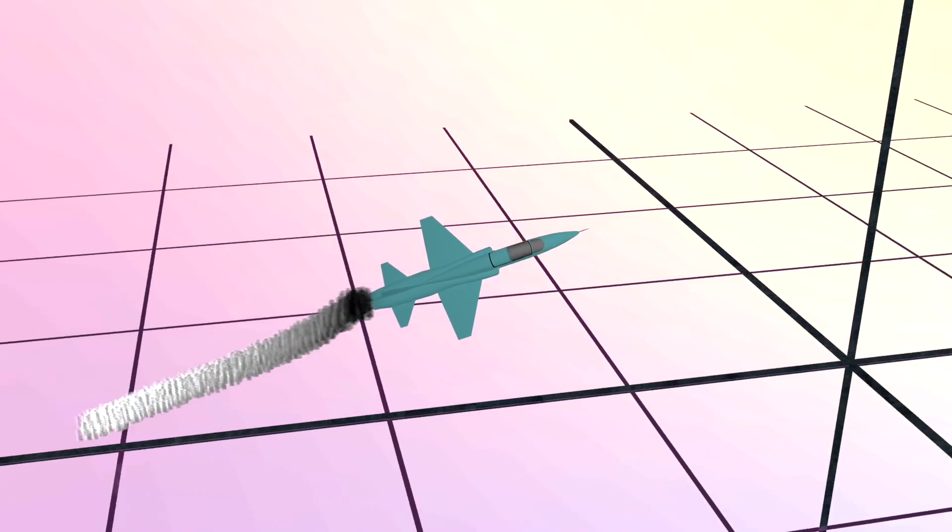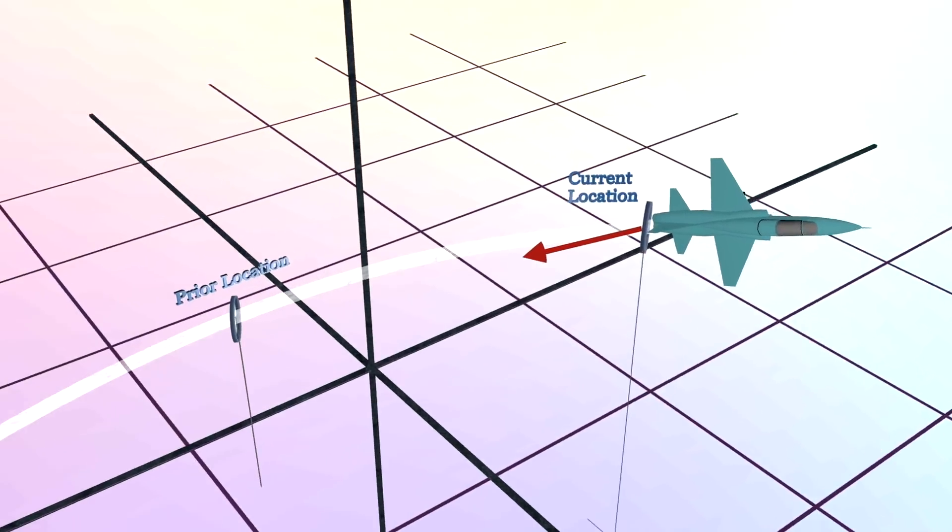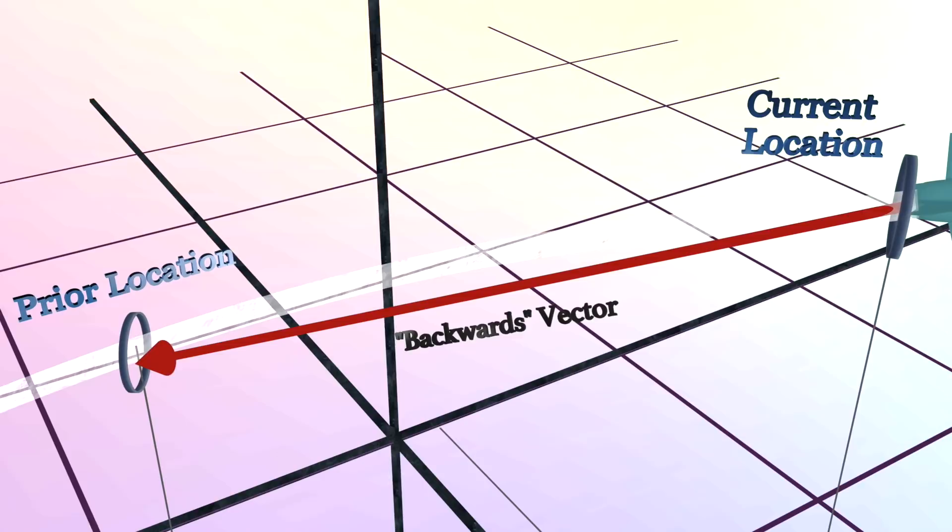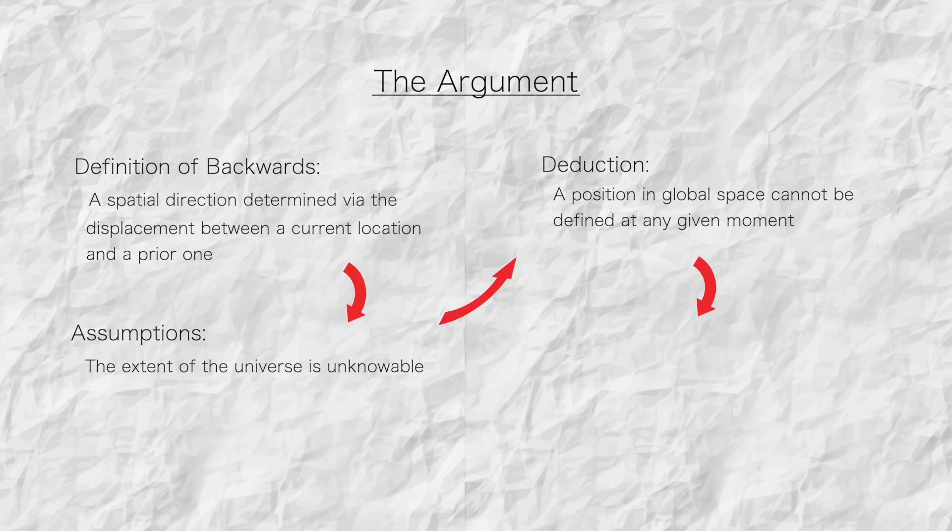And if you can't establish a prior location in space, then you can't establish a backwards direction in space, since the notion of backwards inherently refers to one's prior location in time. Hence, these considerations demonstrate that to travel backwards in space is impossible.